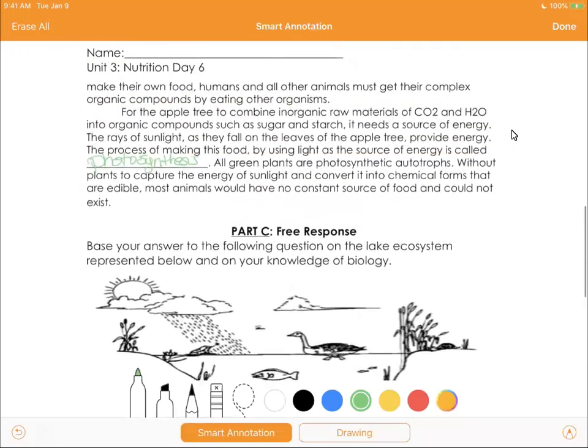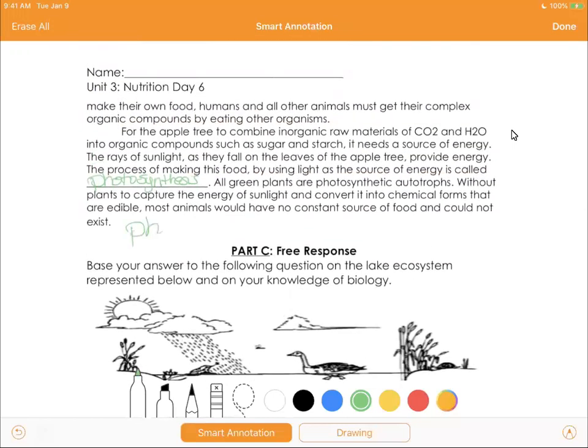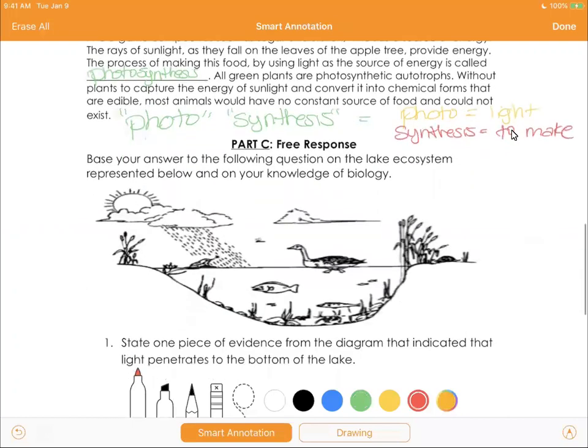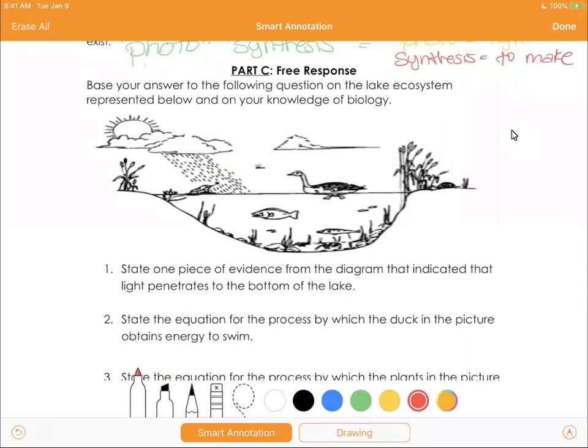By the way, if you break down the word photosynthesis, it breaks down to two words: photo and synthesis. Photo means light, and synthesis means to make. So you're making food using light energy. That's what photosynthesis translates to. Just an interesting tidbit. If this comes up again, this is how I know you'll watch this video.